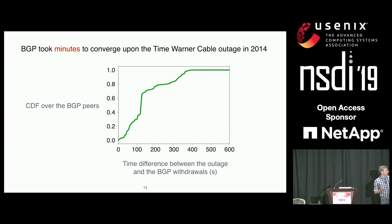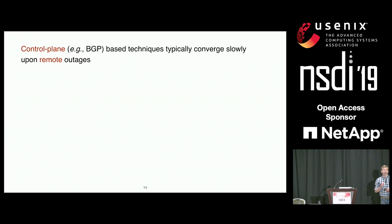This is clearly a very long time during which traffic can be lost. We also looked at the time between the outage and the last BGP withdrawal each peer receives, and it takes five to ten minutes. So clearly the internet converges slowly. The conclusion is that control plane — and more particularly BGP-based — techniques are slow to converge upon remote outages.